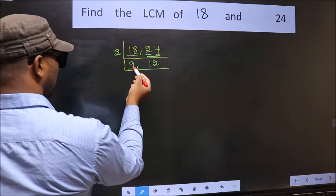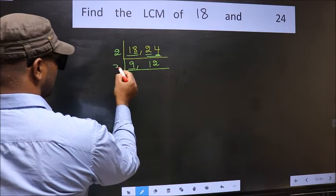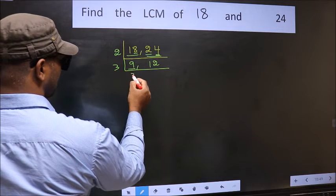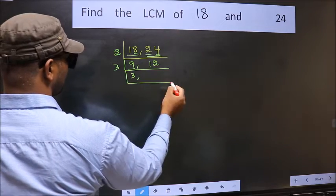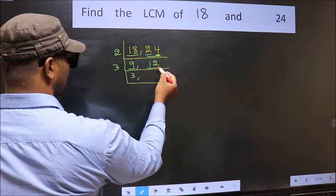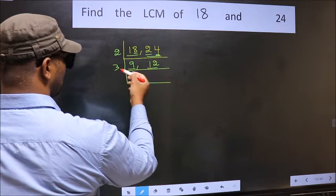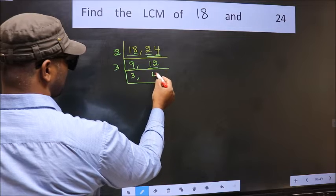Now here we have 9. 3 times 3 is 9. The other number is 12. When do we get 12 in the 3 table? 3 times 4 is 12.